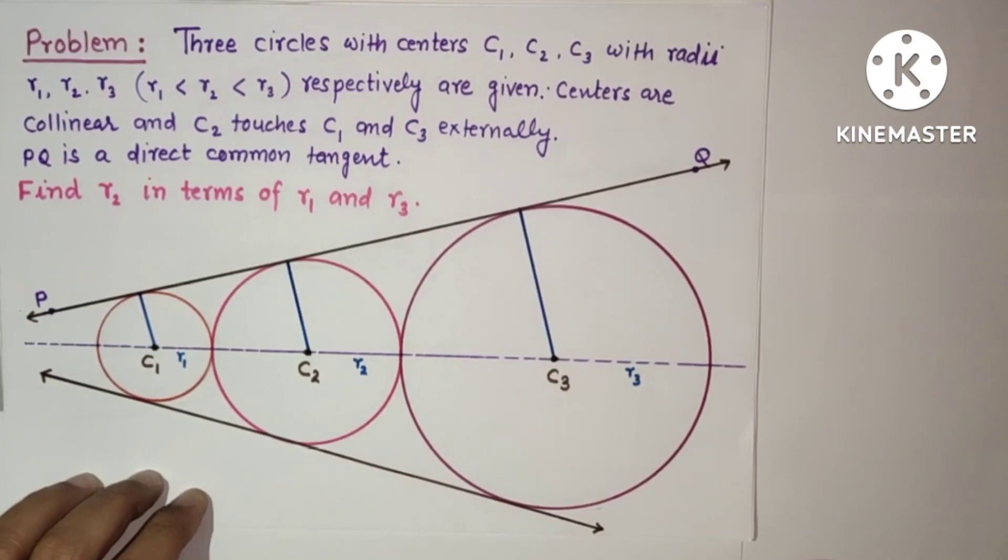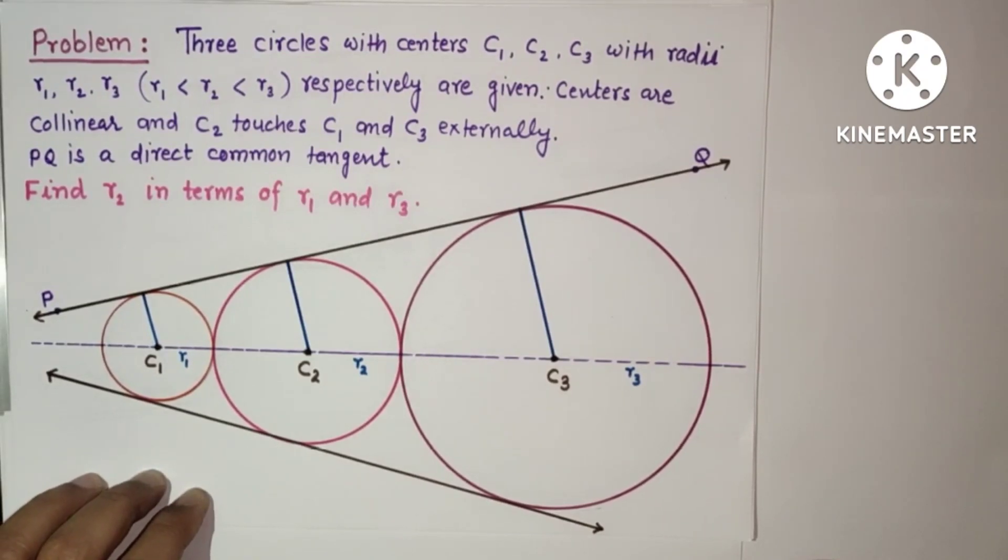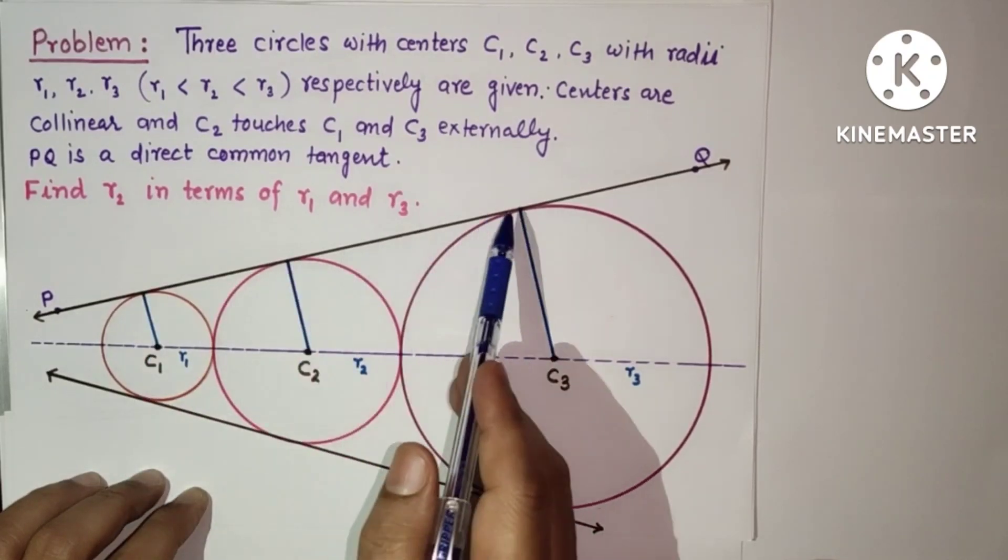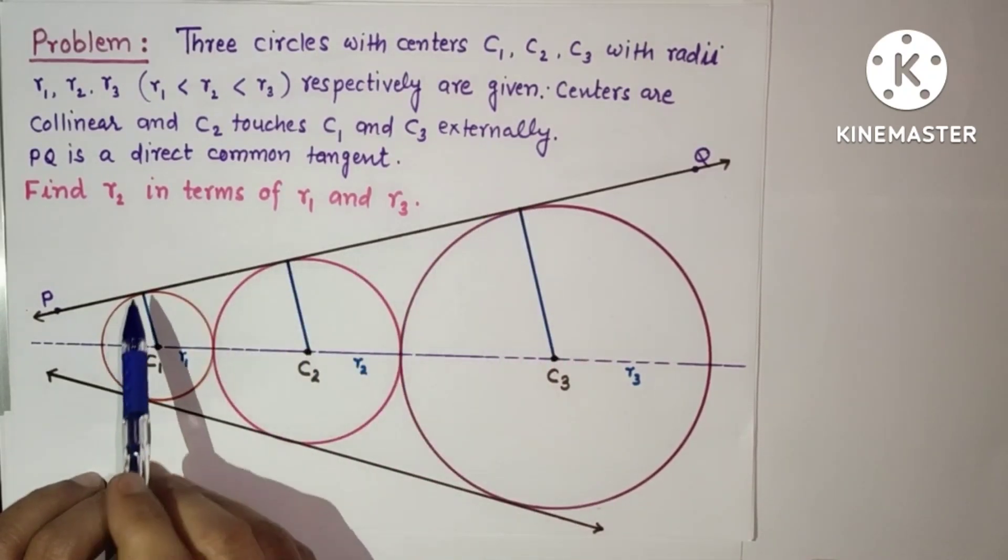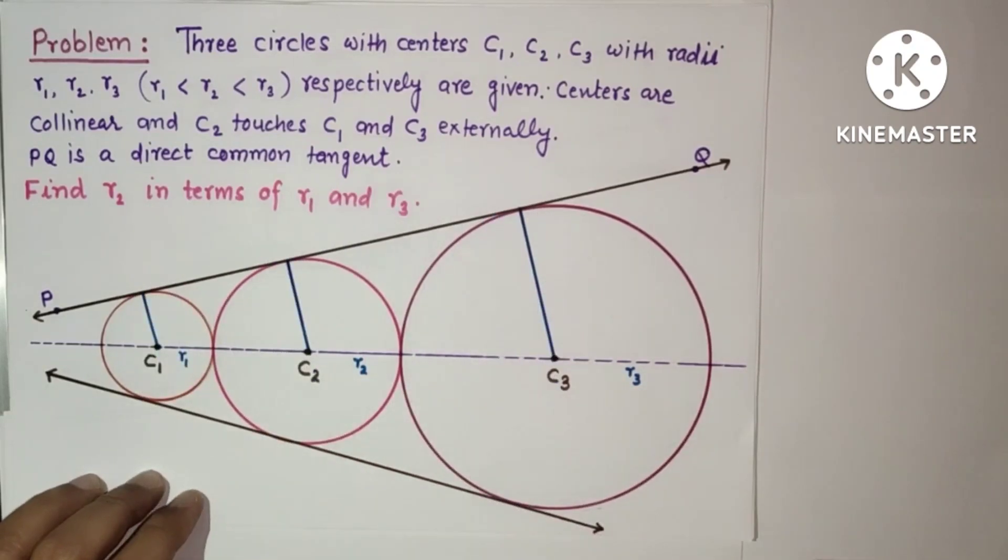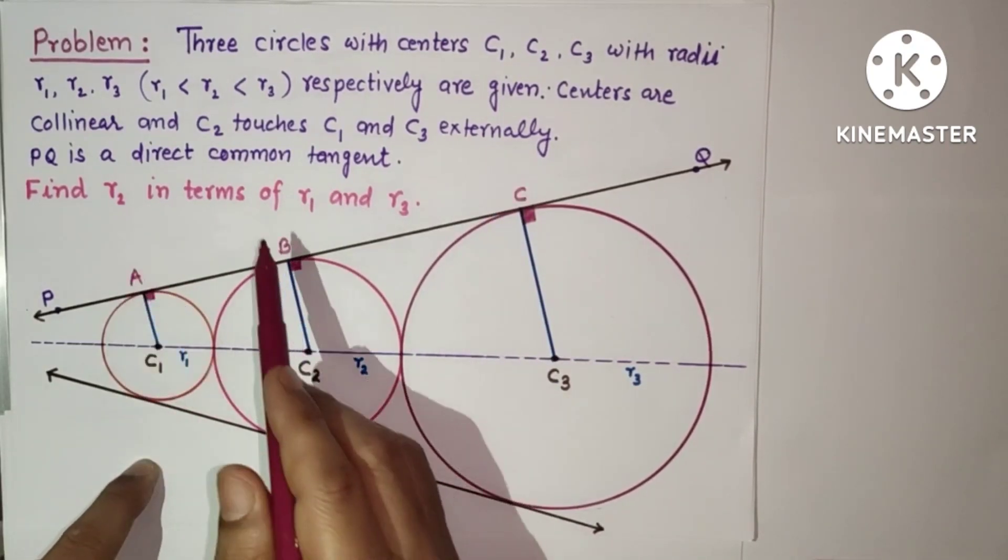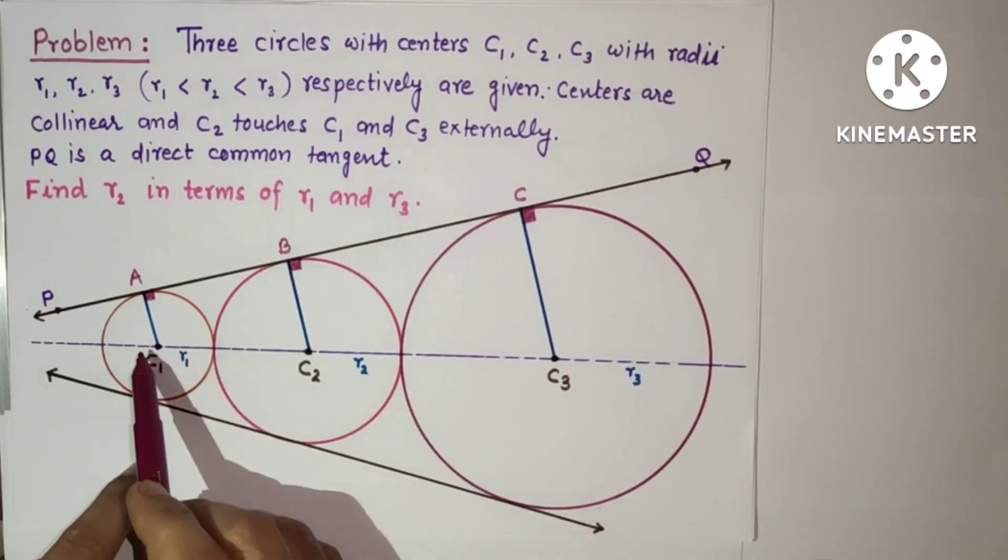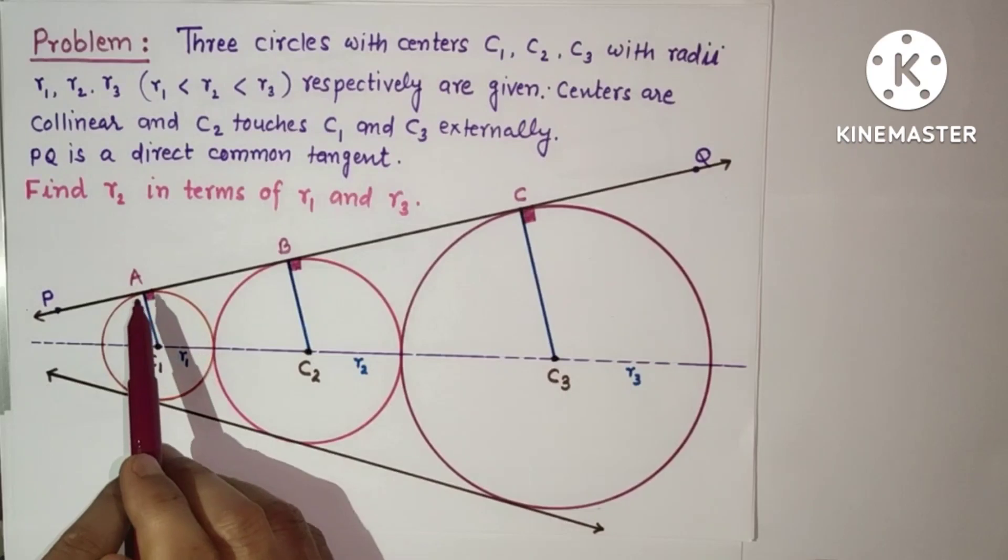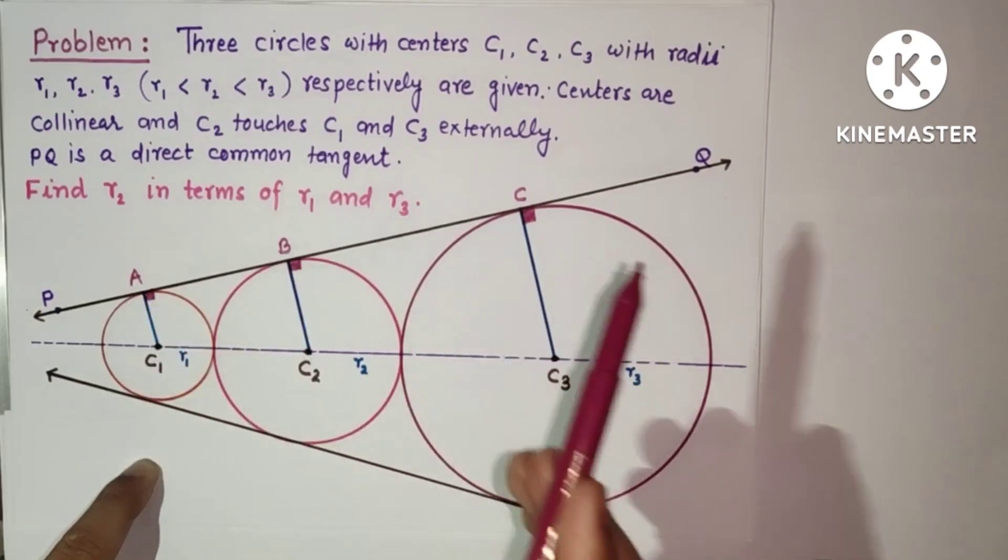This is a very interesting question but it is very simple, based on 9th and 10th standard geometry. We know that radius and tangent at the point of contact will be perpendicular. Let the points of contact be A, B, and C. So C1A, C2B, C3C - these radii are perpendicular to the direct common tangent at points A, B, and C.